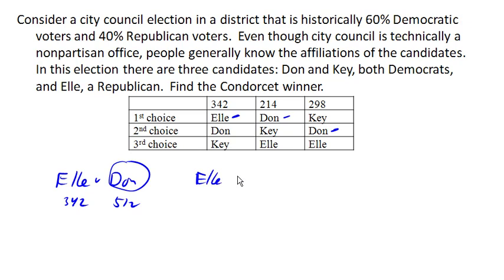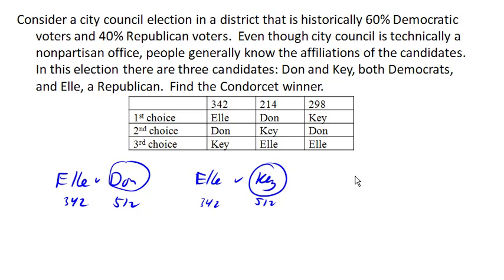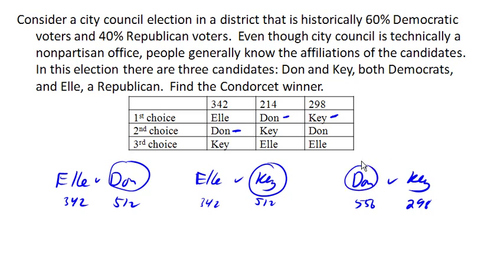Comparing L to Key: L is preferred by 342, and Key is preferred by 512. Next, comparing Don versus Key: Key is preferred by 298, and the other 556 prefer Don. So Don is the Condorcet winner.